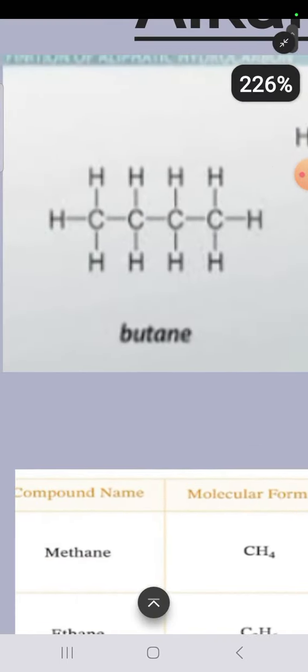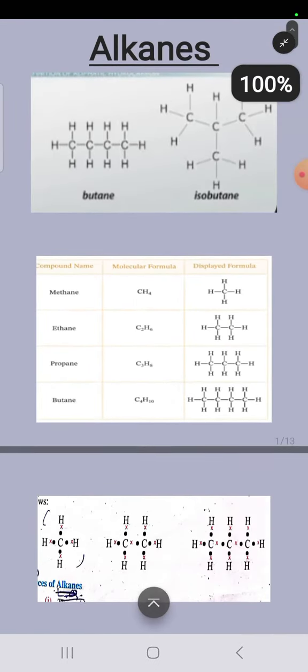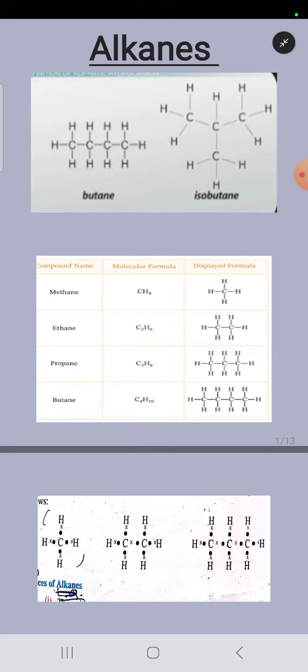You can see over here in this compound carbon is forming all single covalent bonds. It is not left with any other electron to be shared with any other element, that's why it will be less reactive. These alkanes are also referred to as paraffins. Para means less and affin means affinity or reactivity, so they are called paraffins.